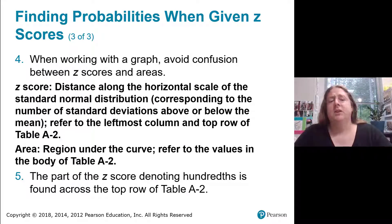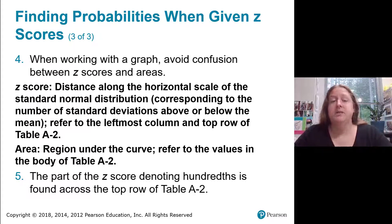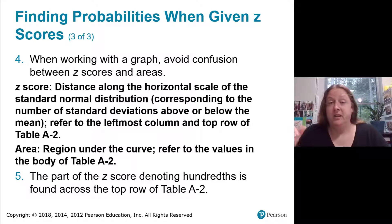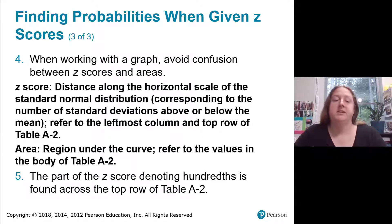In the table, the column determines the hundredths place, while the row gives the ones and the tenths place.